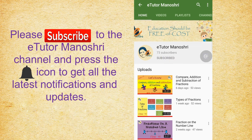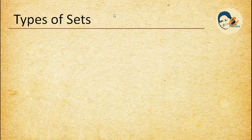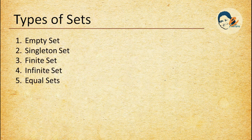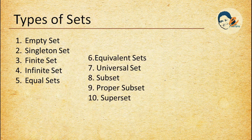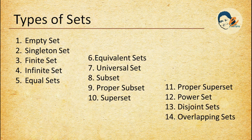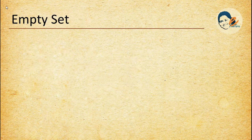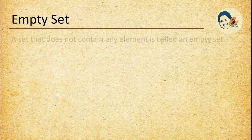Now let's start the types of sets. The types of sets are: empty set, singleton set, finite set, infinite set, equal set, equivalent set, universal set, subset, proper subset, superset, proper superset, power set, disjoint set, and overlapping sets. Now we will discuss them one by one.